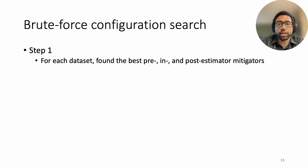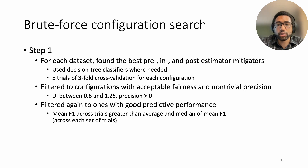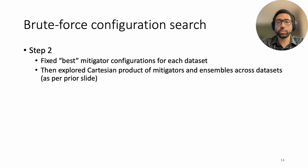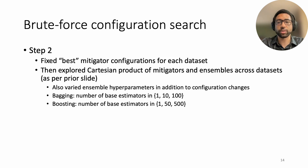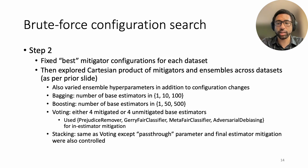Our brute force configuration search unfolded in two steps. In step one, we first found the best pre-, in-, and post-estimator mitigators with single estimators for each dataset. We used decision-tree classifiers where needed, and five trials of three-fold cross-validation to evaluate each configuration. We then filtered potential configurations to ones that yielded fairness within reasonable bounds and non-trivial precision. After filtering again to configurations with good predictive performance in terms of mean F1 across trials, we selected the mitigator with max precision for COMPAS or max recall for all other datasets as the best mitigator for the dataset. In step two, we fixed the best mitigator configurations from step one and explored the Cartesian product of mitigators and ensembles across datasets. For bagging and boosting, we varied the numbers of base estimators from small to large values. For voting, we utilized either four mitigated or four unmitigated base estimators, and for stacking, this approach was extended with pass-through and final estimator mitigation also as hyperparameters.